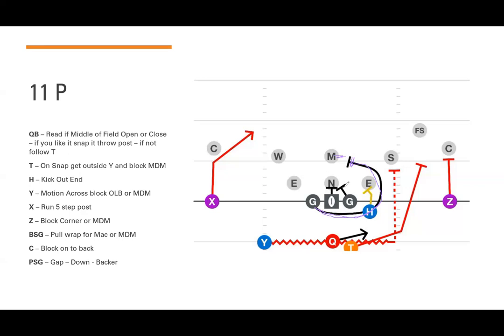The center blocks on or down — if something is on him he blocks it, and if there's a nose shifted into the A gap the center blocks down to the end. Because this is a three-three stack defense, the nose is head-up on the center so the center blocks on. The play-side guard reads gap-down-backer: if someone's in his inside gap he blocks it; if not, he looks for a defender over the down player from him. If the center has a player over him, they double-team, then one comes off to pick up the backside linebacker.